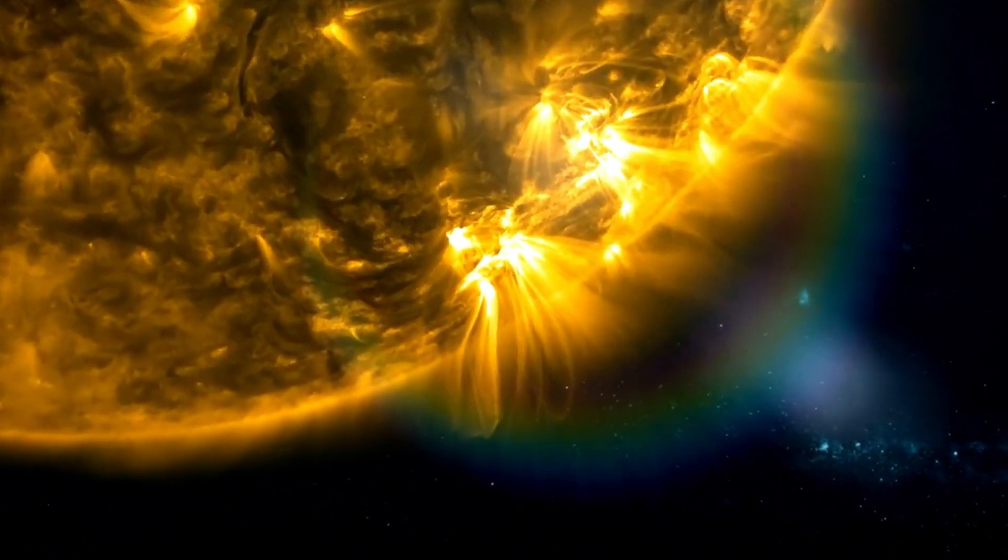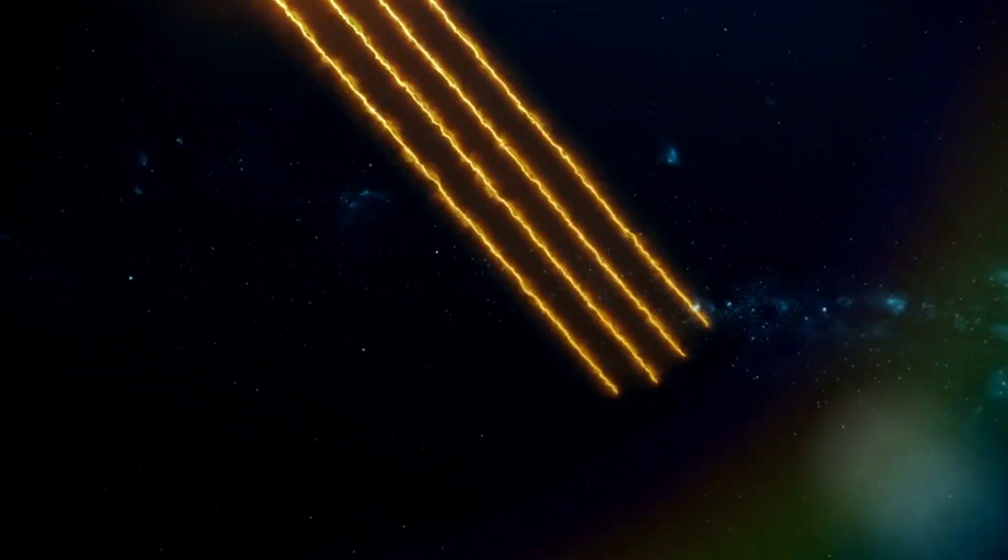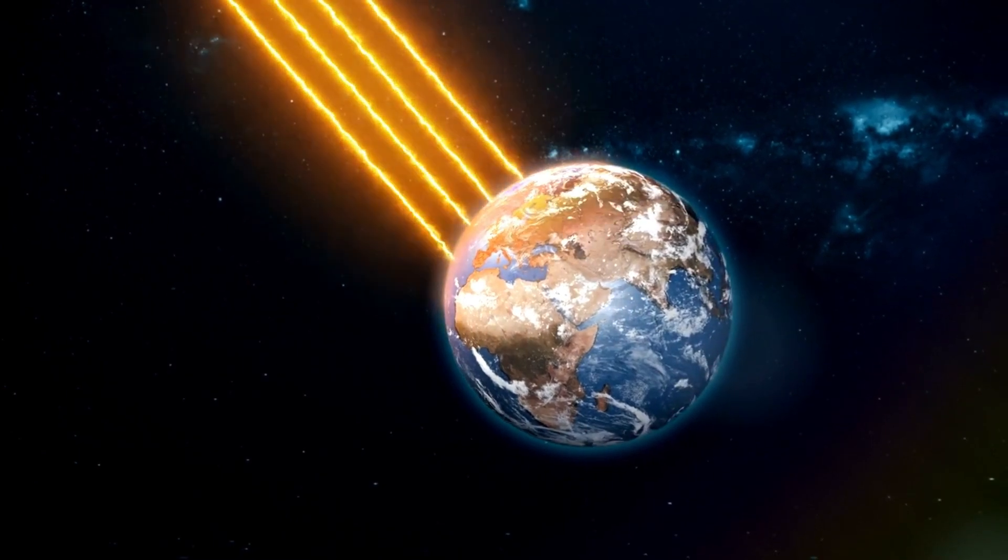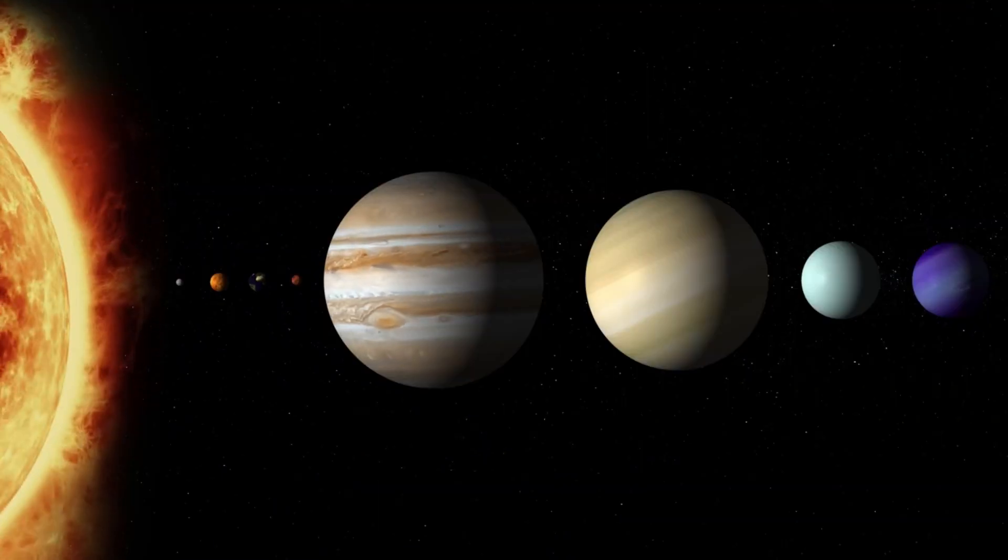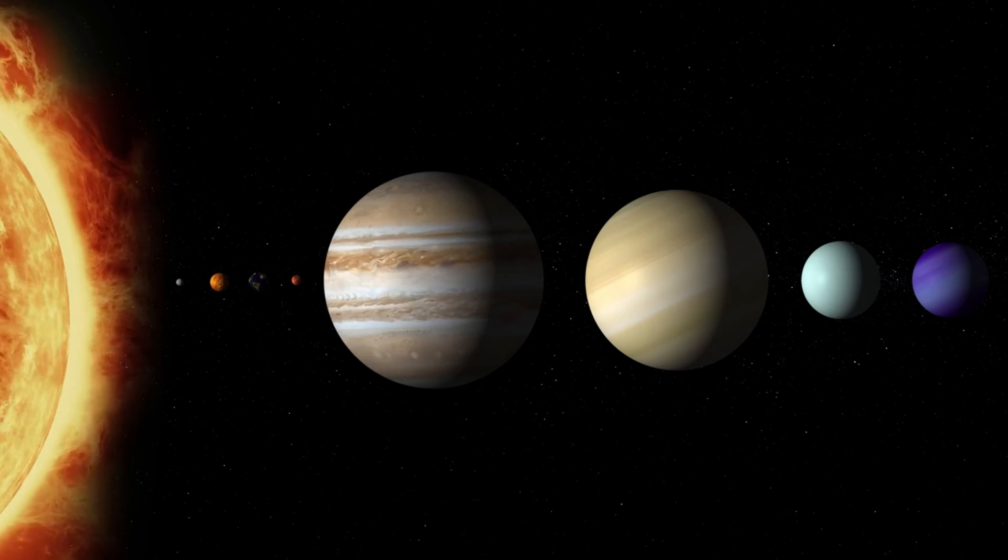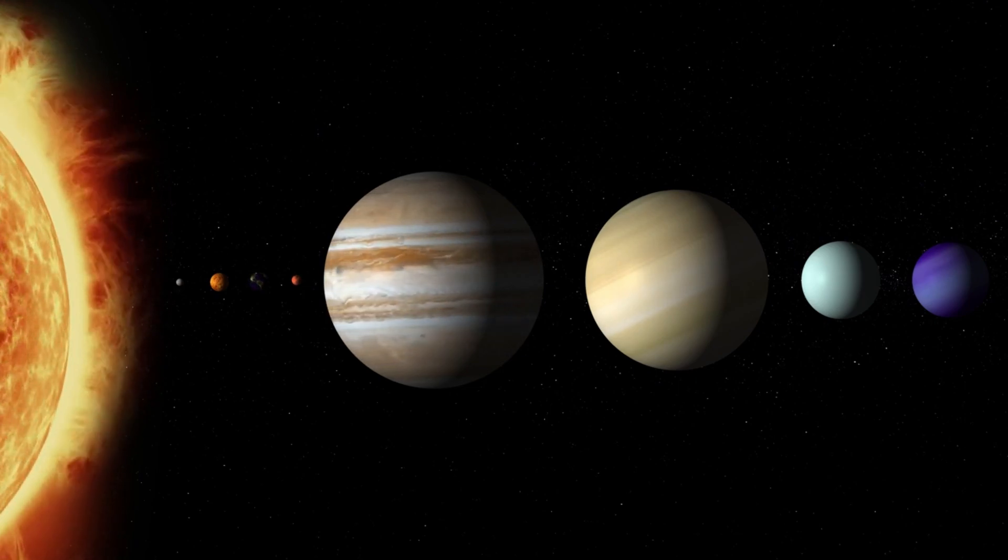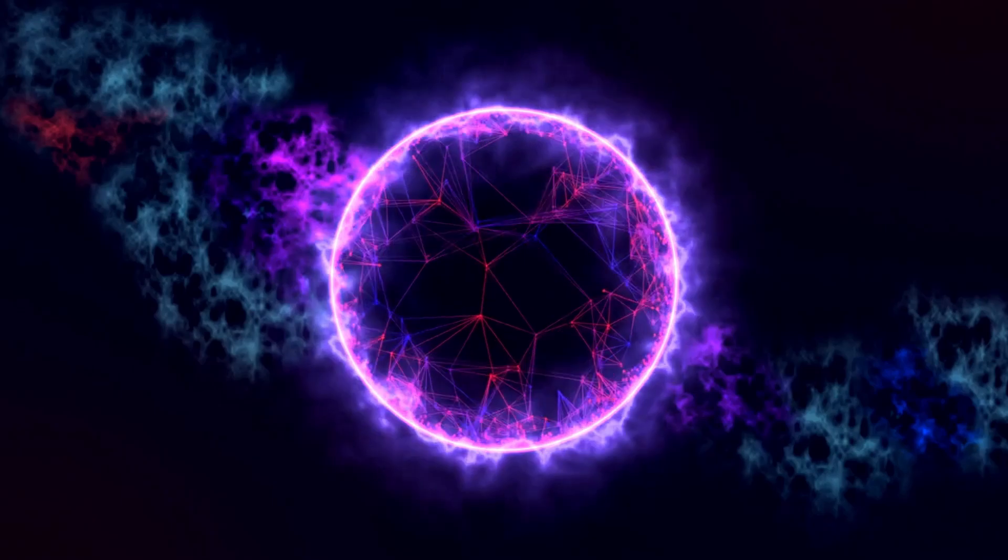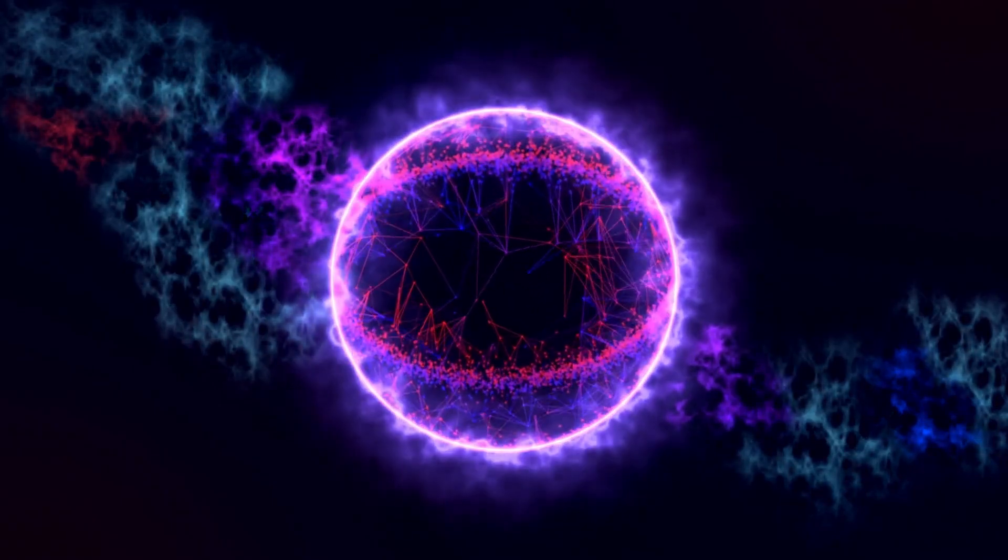The Sun has been exceptionally dynamic of late, and it's going to go through a fundamental and interesting change, the inversion of its magnetic field. This phenomenon happens roughly every 11 years, denoting the midpoint of the solar cycle, and it has extensive ramifications for us here on Earth.